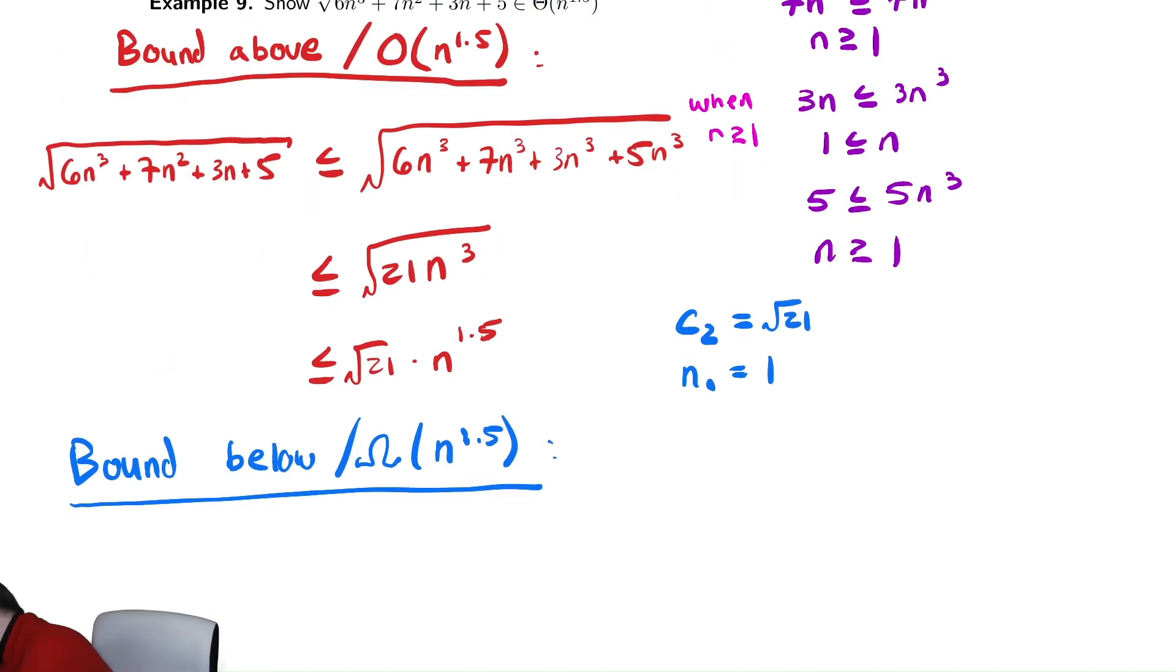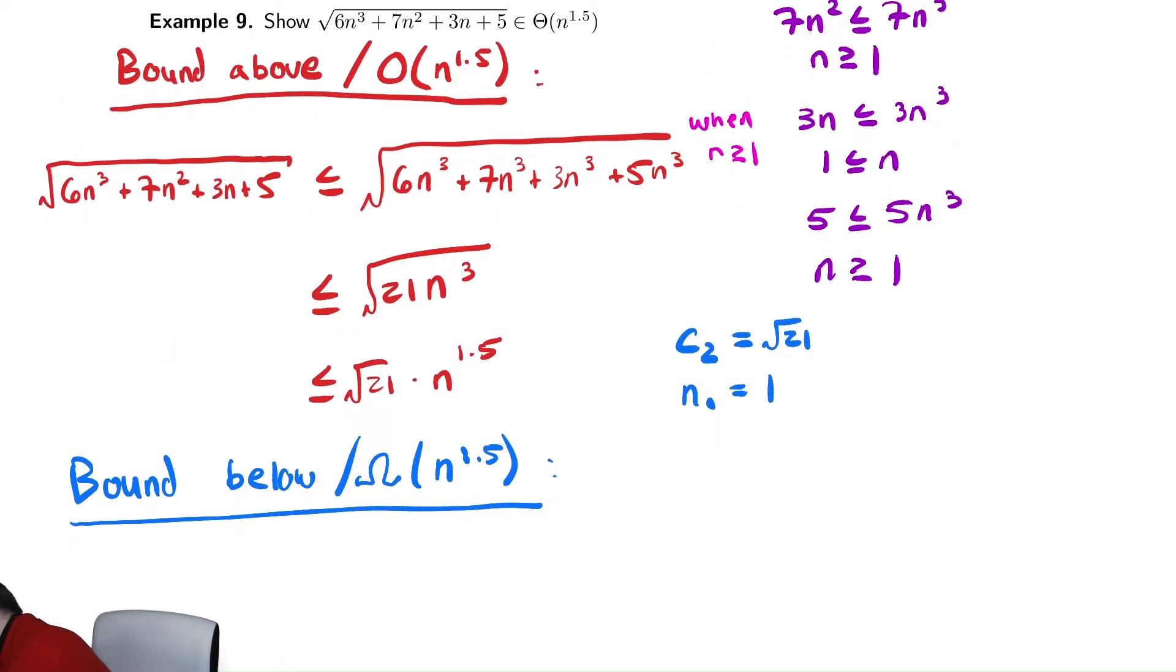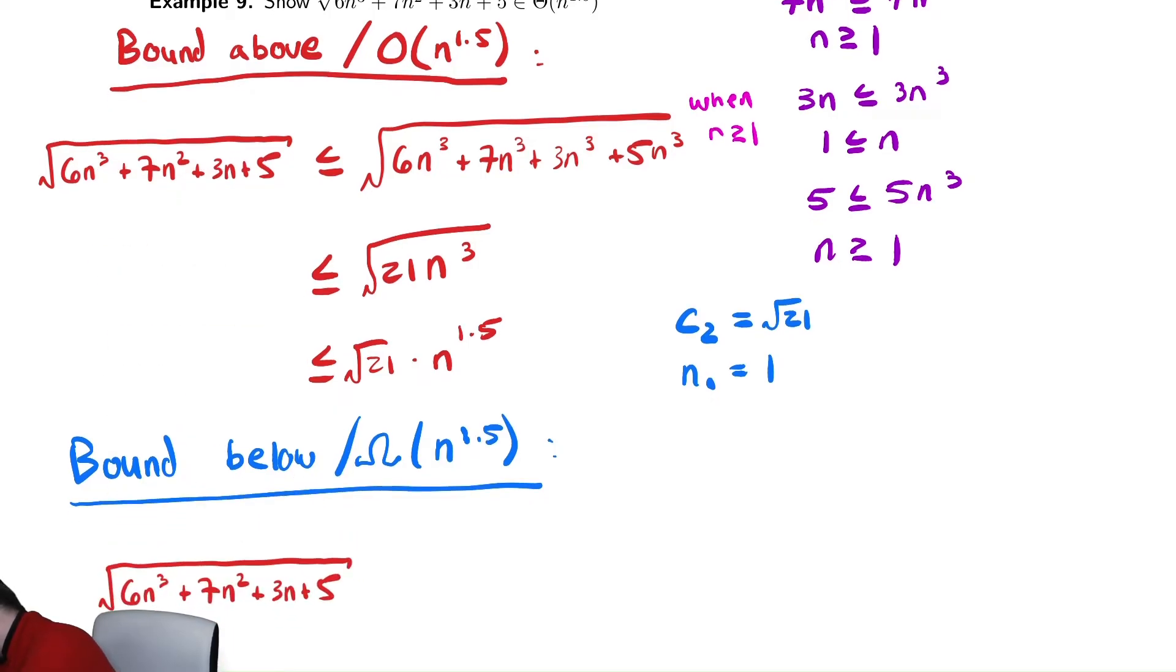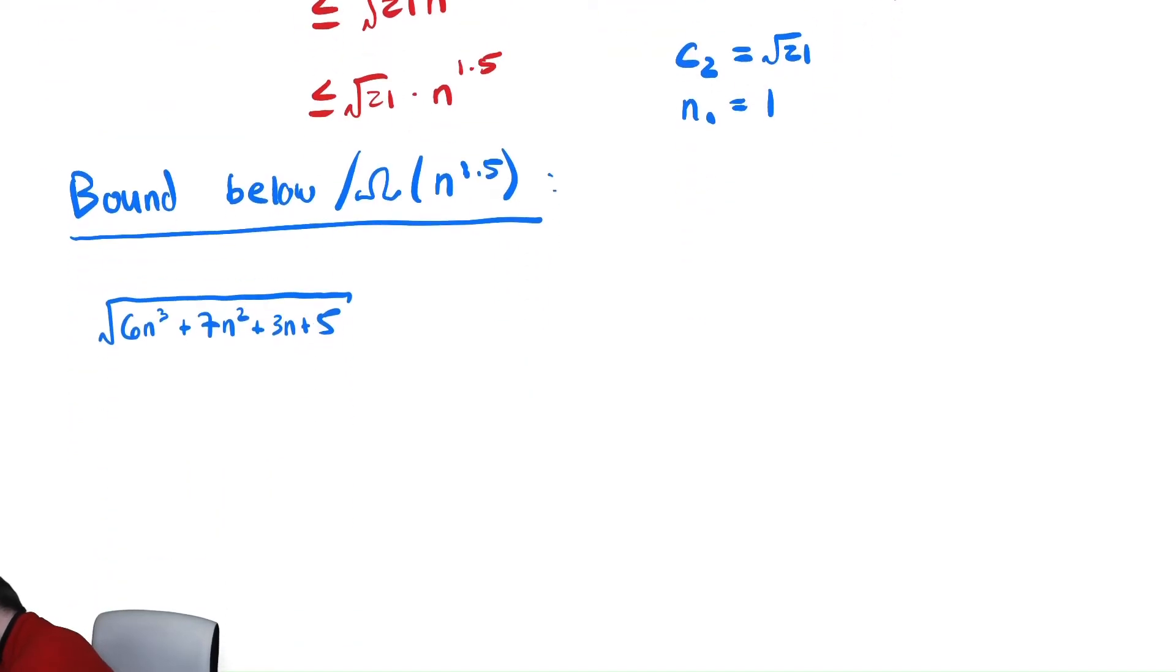Just like we did before, let's start with the given function. We can do that by just copy pasting and then recoloring it. So, we duplicate and recolor. Now, we drop all of the lower order terms that are positive. This is an easy example. All of the lower order terms are positive. So, we drop everything but the 6n cubed.